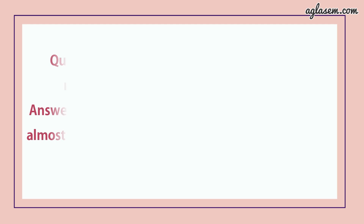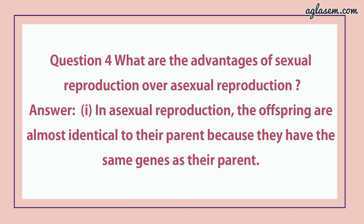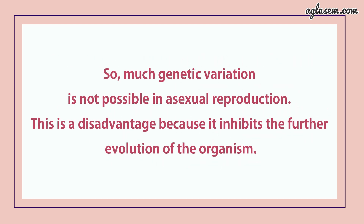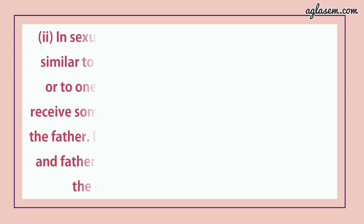Question number 4 says: what are the advantages of sexual reproduction over asexual reproduction? Answer: in asexual reproduction, the offsprings are almost identical to their parents because they have the same genes. So much genetic variation is not possible in asexual reproduction. This is a disadvantage because it inhibits the further evolution of the organism.